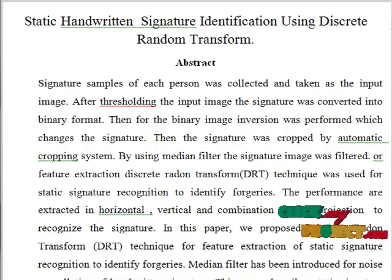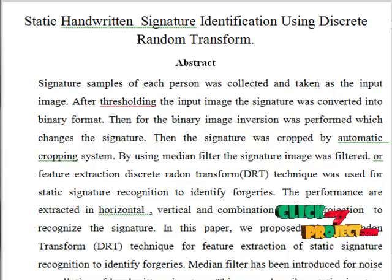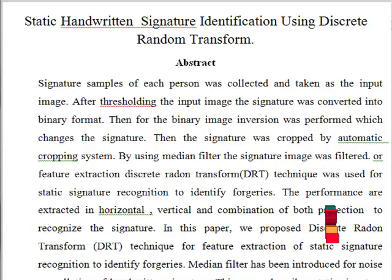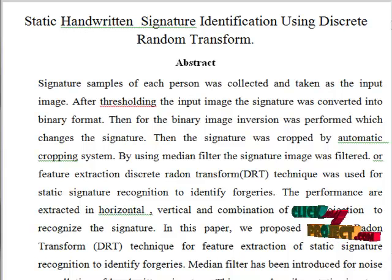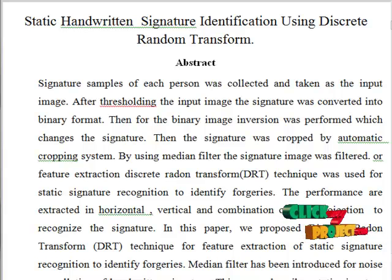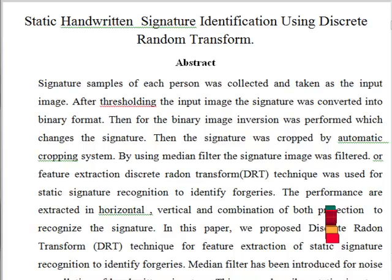Finally, we conclude that for the static handwritten signature recognition system, feature extraction was done by discrete radon transform. The feature vectors are horizontal projection, vertical projection, and combined projection. By training, we calculate the minimum distance for the signature image, and then we can detect whether it is original or forgery. The combined feature obtains FAR (false acceptance rate), FRR (false rejection rate), and EER (equal error rate) values less than those from horizontal and vertical projection features separately.